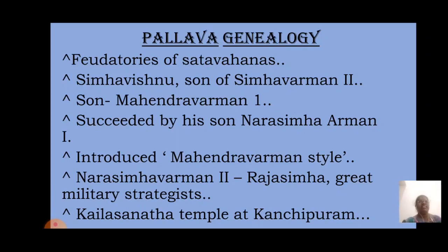Mahendravarman also wrote plays like Mattavilasa Prahasana — 'the delight of the drunkards' — in Sanskrit, which denigrates Buddhism. His reign involved constant battles with the western Chalukya kingdom of Badami under Pulakesin II. Pulakesin seems to have defeated Mahendravarman in one of the battles and taken over a large part of his territory, that is Vengai, in the north.